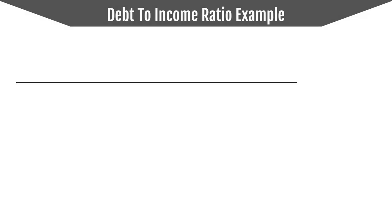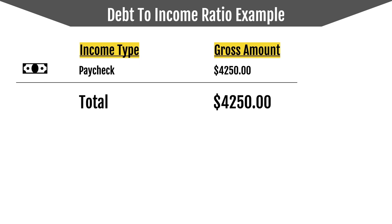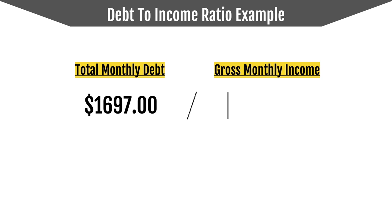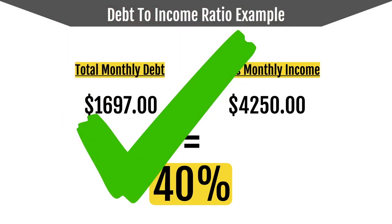Now we're gonna look at income — the income type and the gross amount before anything is deducted. In this case, we have a paycheck with a gross amount of $4,250, so the total income is $4,250. We calculate the debt-to-income ratio: $1,697 divided by $4,250 equals a 40% debt-to-income ratio, which is great — it is below the 43%.